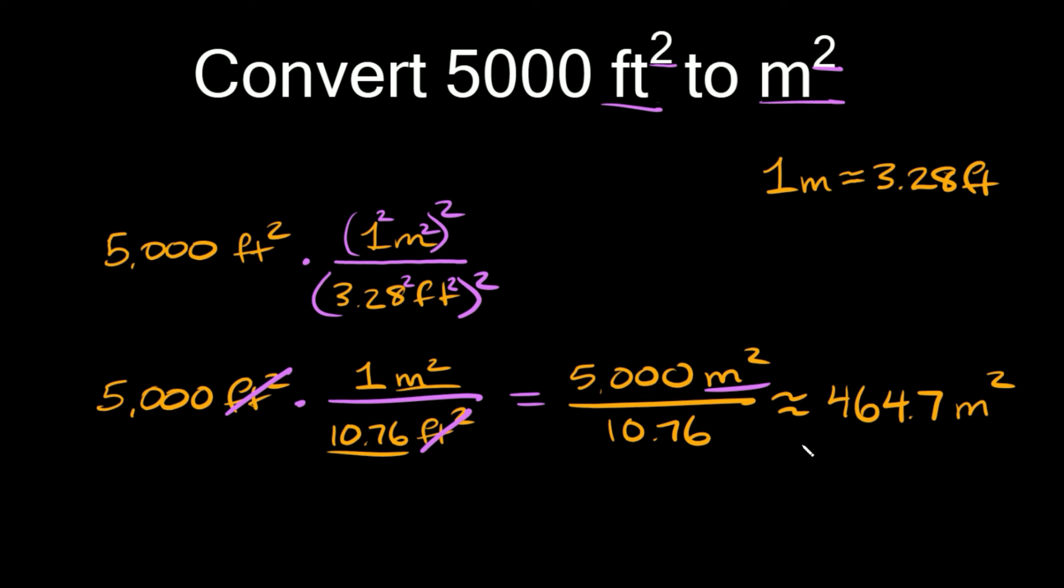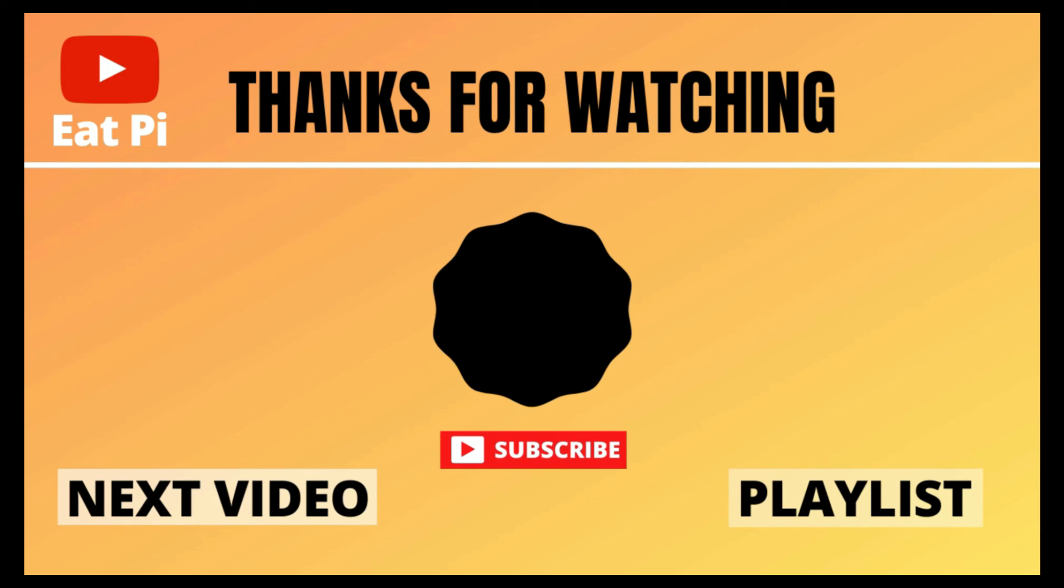So 5,000 feet squared is equal to approximately 464.7 meters squared. So if you found the video helpful definitely leave a thumbs up down below. And if you have any other questions or want to see any other examples just let me know in the comment section below.